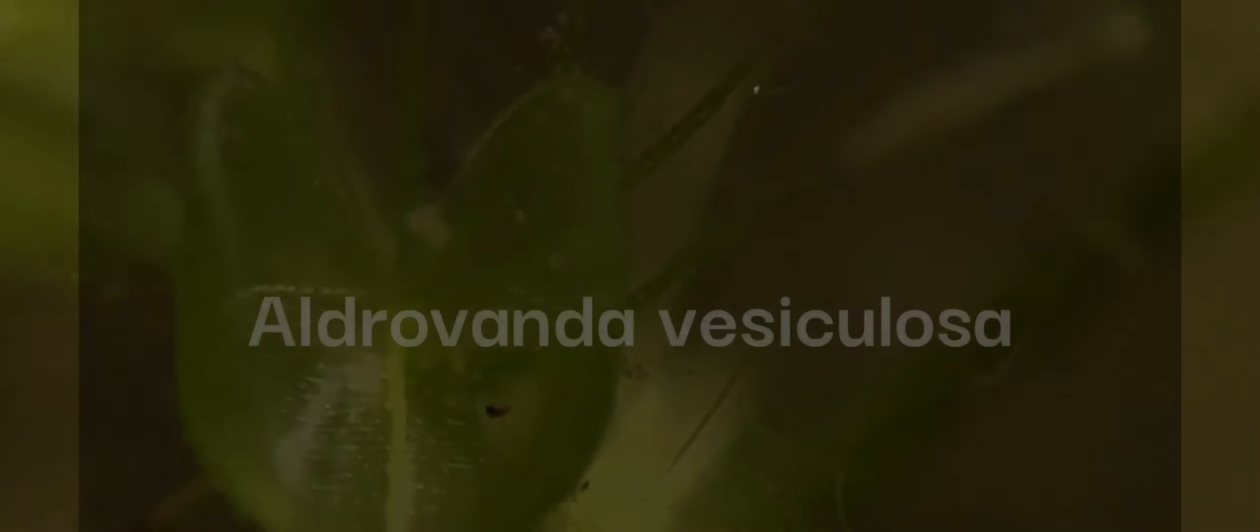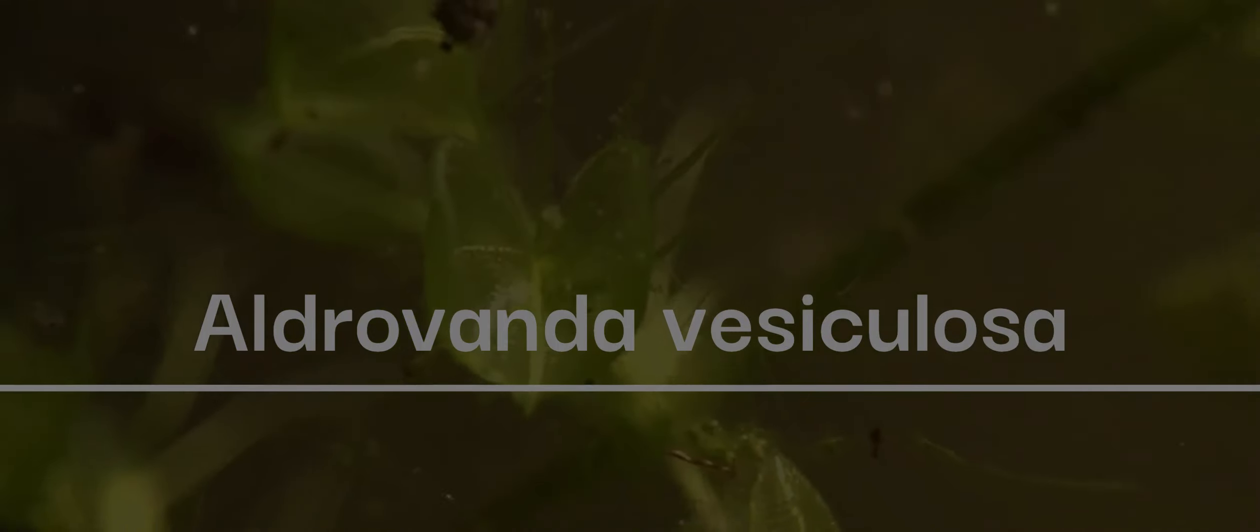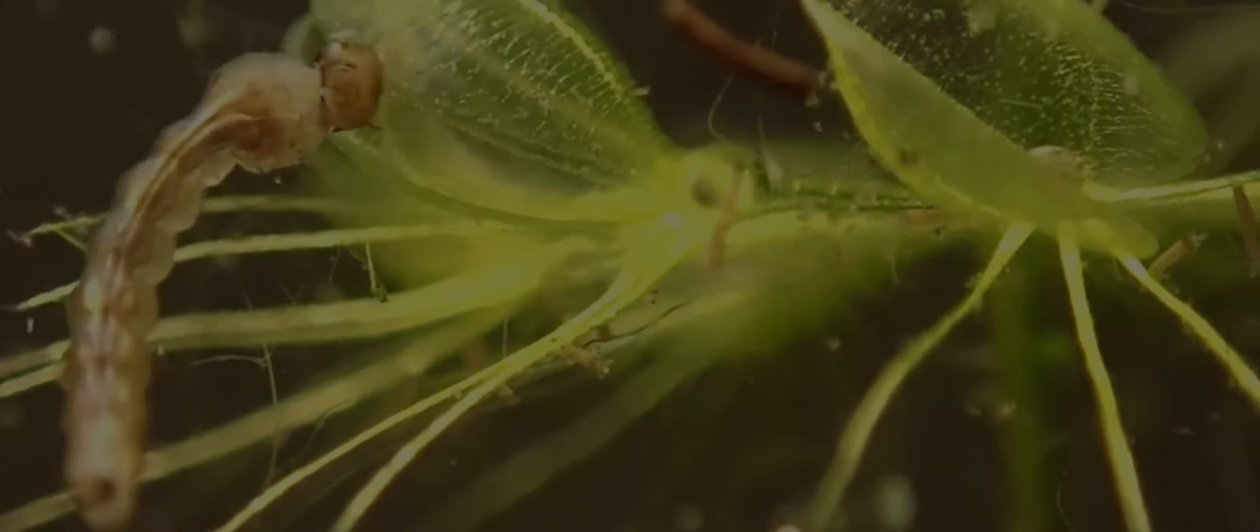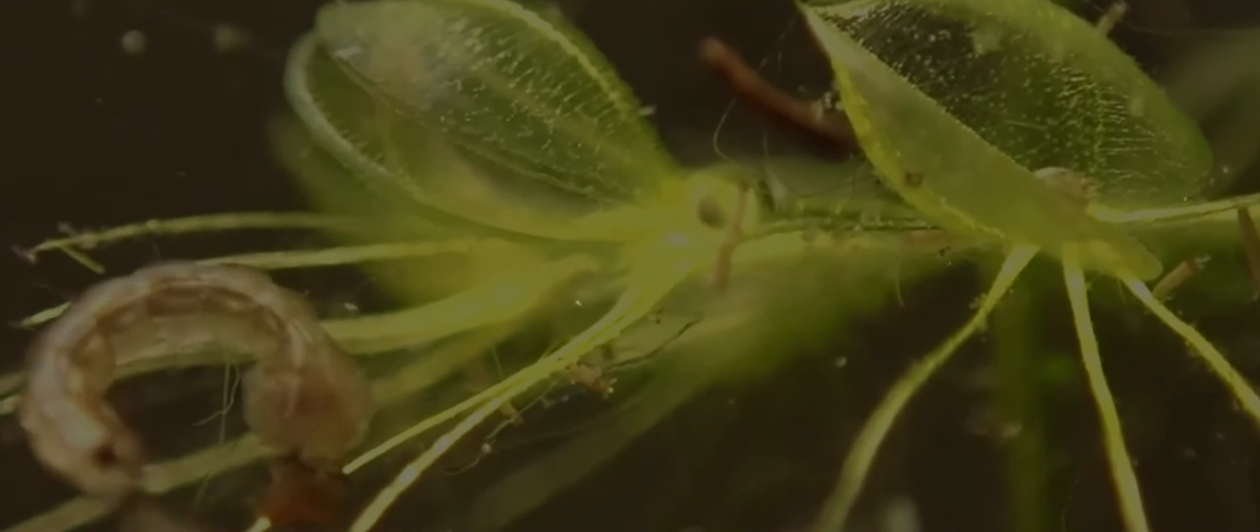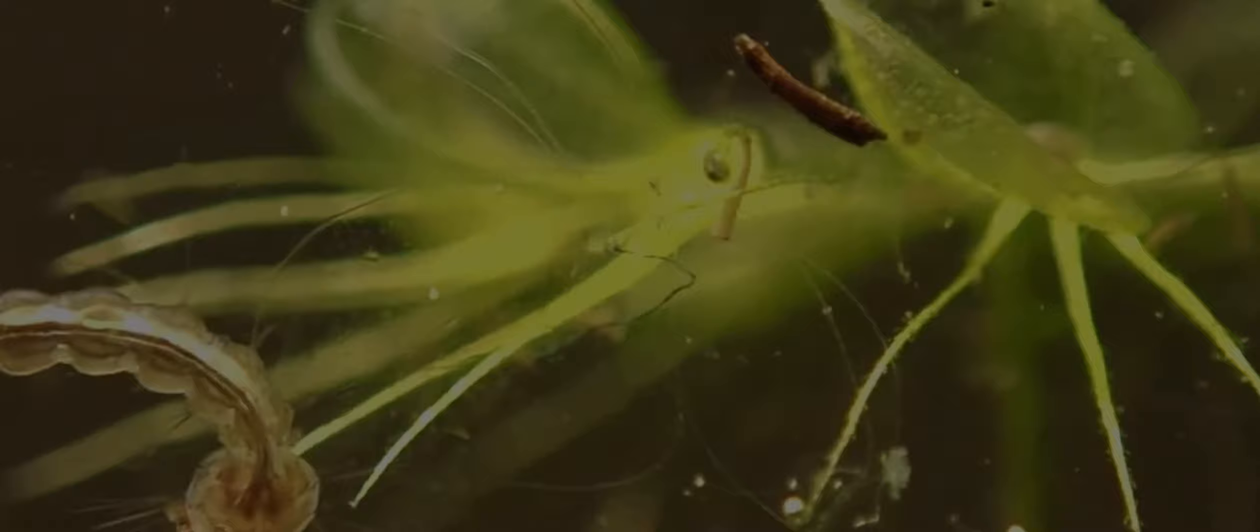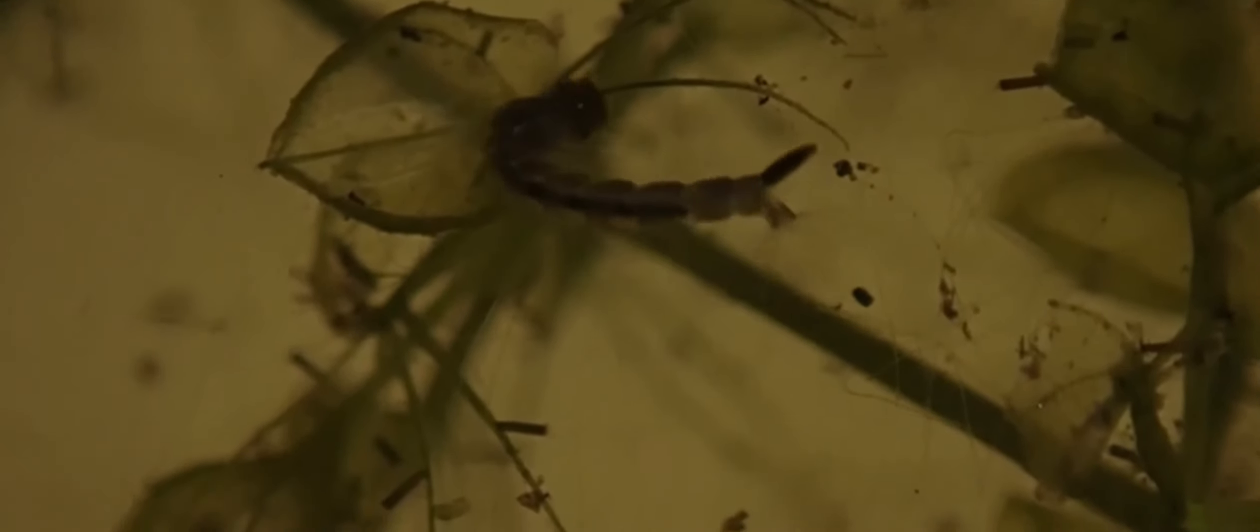2. Aldrovanda vesiculosa. It is commonly known as the waterwheel plant, the second most widely distributed carnivorous plant species. This is one of the few plant species capable of rapid movement. This aquatic plant isn't rooted and dines on tiny water creatures.